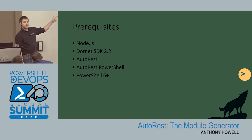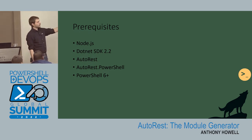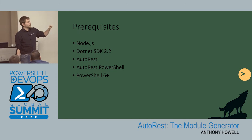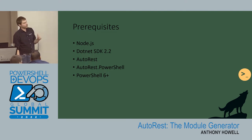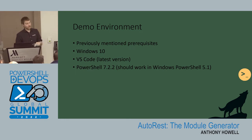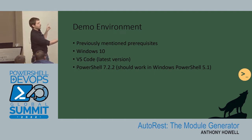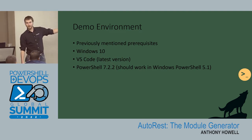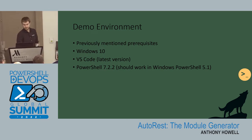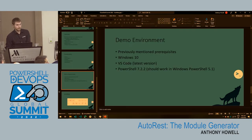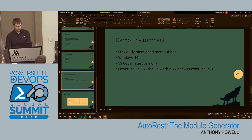Prerequisites: it's got to be PowerShell 6 at least to use AutoRest for building, even though the SDKs themselves will work in v5.1. The other prerequisites are Node.js, .NET SDK 2, AutoRest, and AutoRest PowerShell. My demo environment here is Windows 10, with all previously mentioned prerequisites, VS Code, and PowerShell 7.2.2. When you build it, you need at least PowerShell 6, but what you do build will work in v5.1.